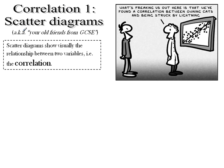The first part of it is all about scatter diagrams, and this is nice because you did these to death at GCSE, you know all about these. They show visually the relationship between two variables, i.e. the correlation. And there's a fine example here illustrating the correlation between owning cats and being struck by lightning. And actually this makes a serious point, apart from being a joke, which is that there can be correlation between two variables and it can be meaningless. It doesn't have to imply a relationship, and you have to bear that in mind.